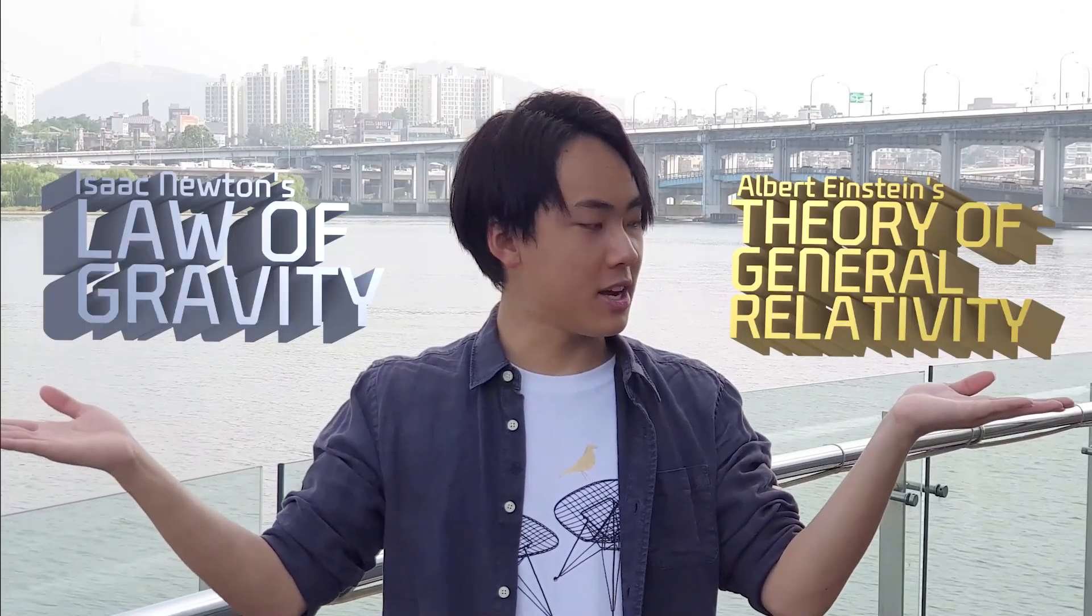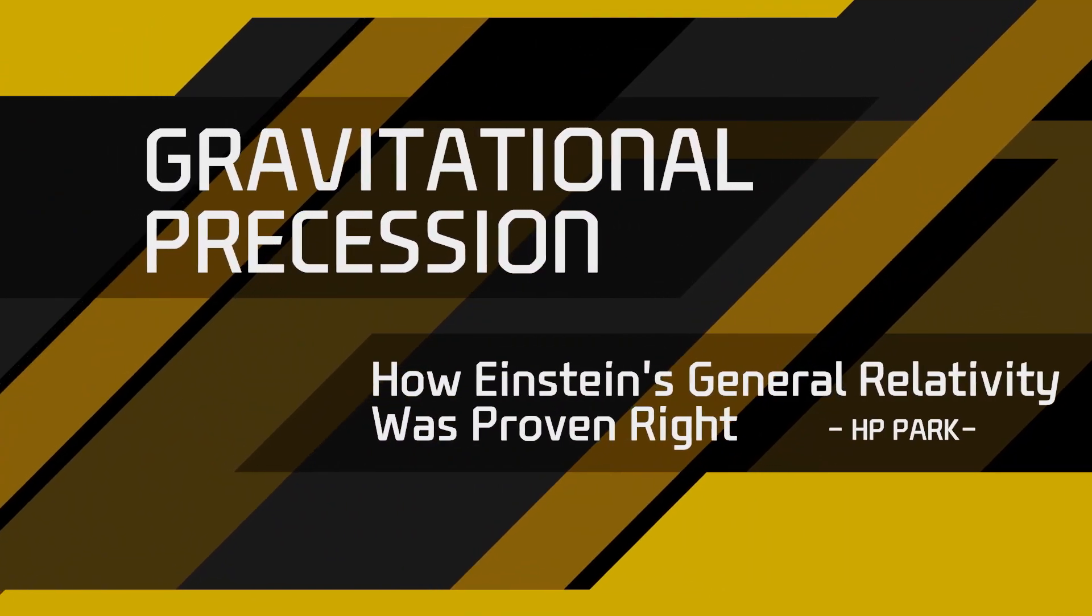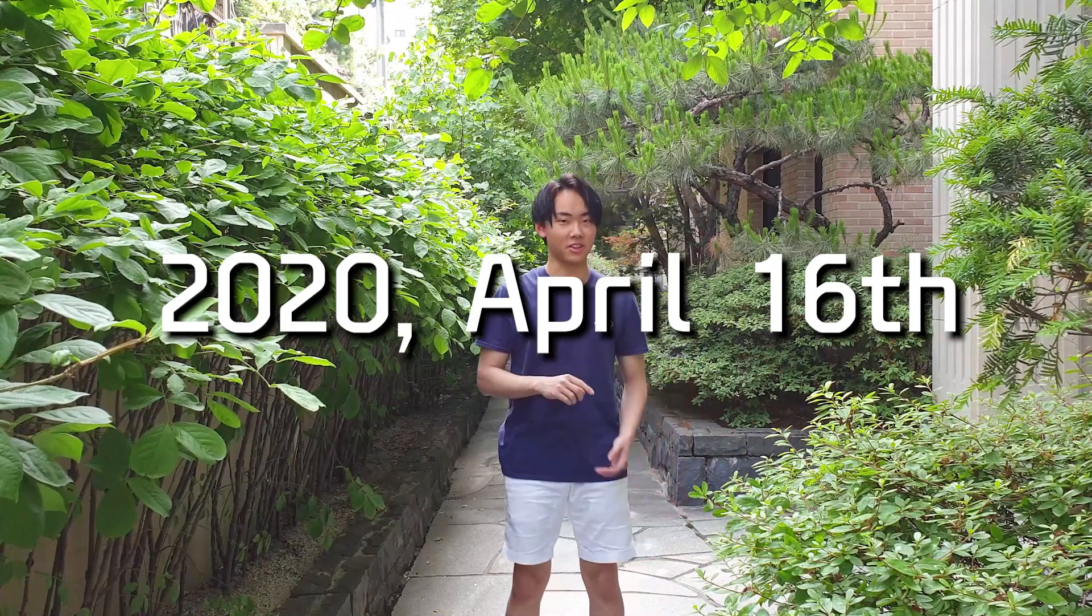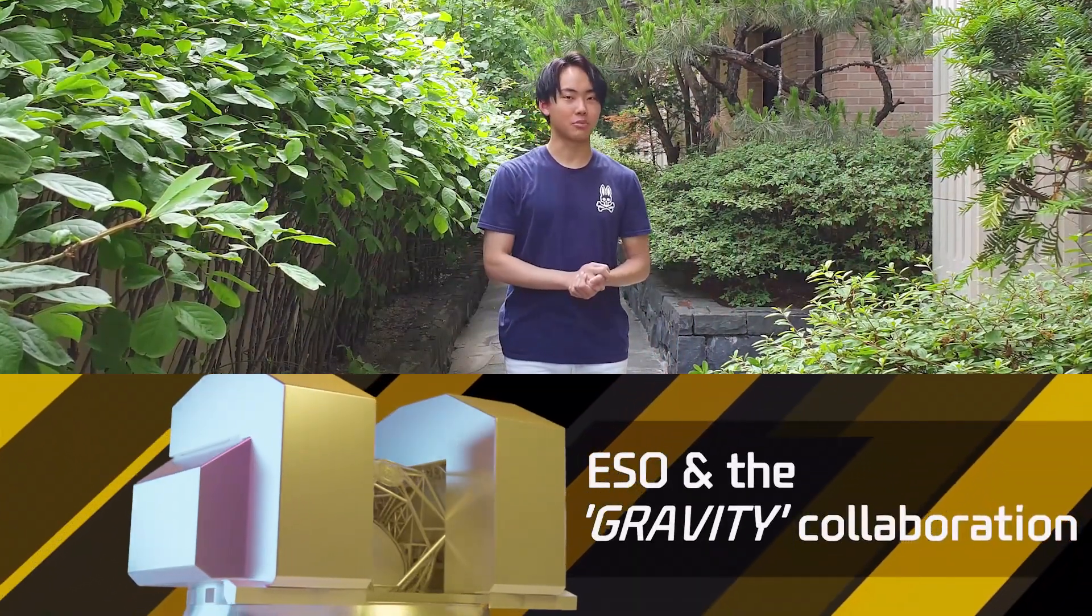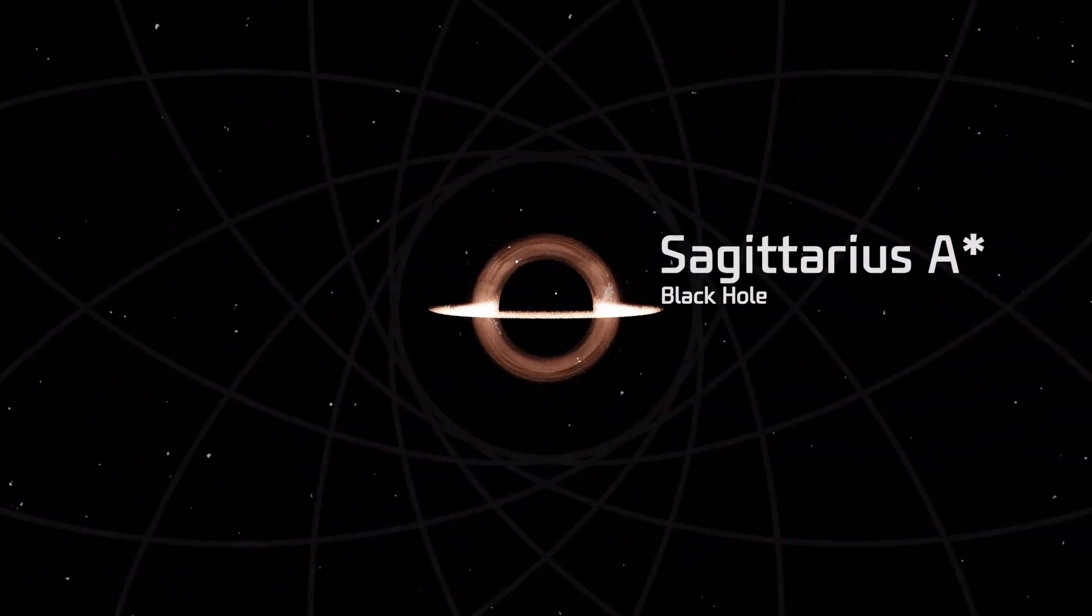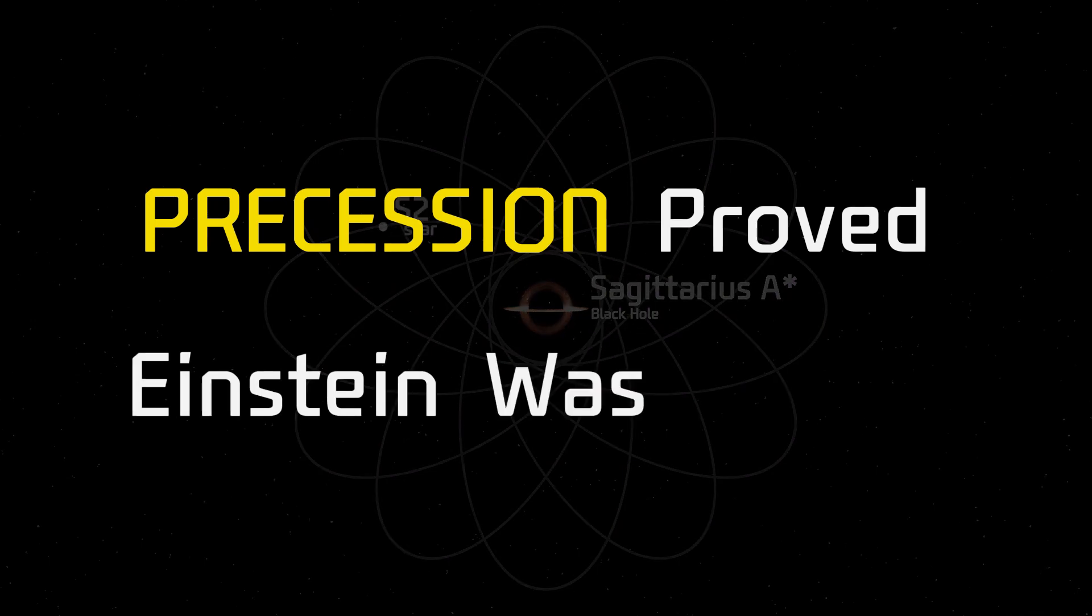So which one's right, and how can we prove it? This year, 2020 April 16, ESO and the Gravity Collaboration published the observations on a star, S2, orbiting a massive black hole at the center of our galaxy, which its precession proved Einstein was right.